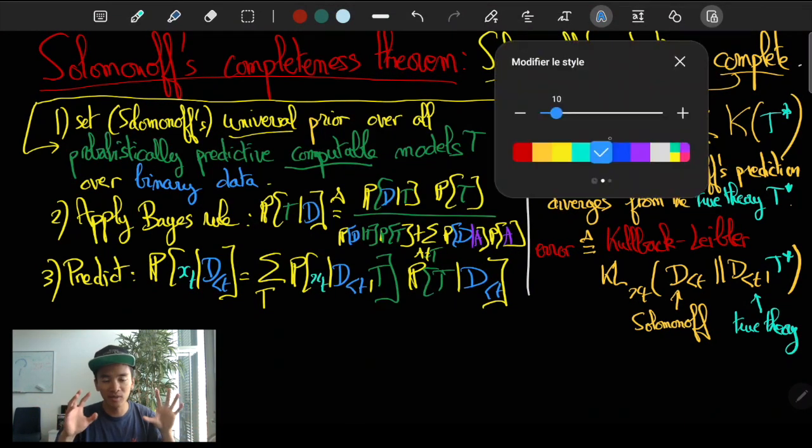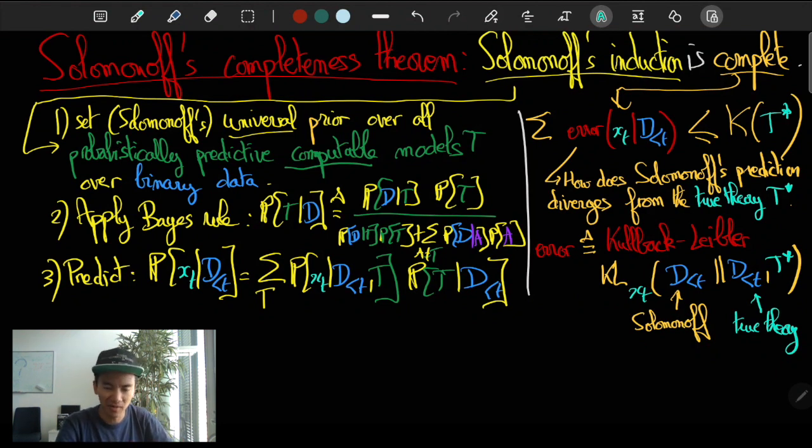But if you don't know about KL divergence, just keep in mind that it is a very natural way to make the comparison, which is related to ideas from entropy and code compression and stuff like this. In any case, it is a non-negative measure.